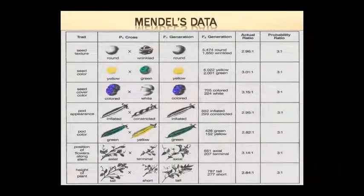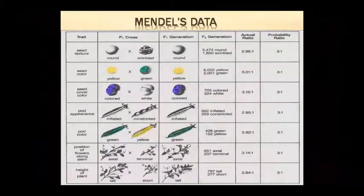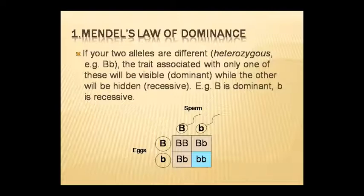When Mendel crossed parents, he observed different colors in F1 generation. The phenotypic ratio in F1 is always 3:1. The character that shows itself is called the dominant character, and the one hidden in the F1 generation is called the hidden or recessive character — for example, capital B is dominant and small b is recessive. When crossing pure parents, the character that appears in F1 is called dominant.